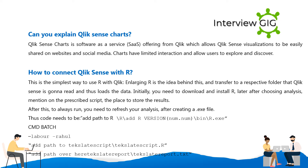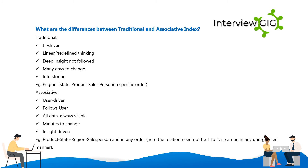To connect Qlik Sense with R, the simplest way is to use R with Qlik by transferring results to a folder that Qlik Sense will read and load as data. First, download and install R. After choosing your analysis, mention the prescribed script and the place to store results. To always run the analysis, refresh after creating the output file. The code path format is: add path to R\R\version_num.num\bin\R.exe CMD BATCH, then add path to the script file (.R), then add path to the output report (.txt).